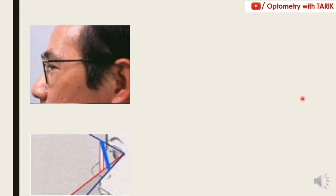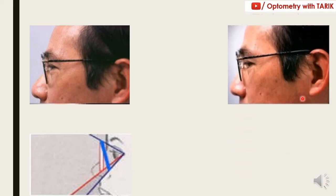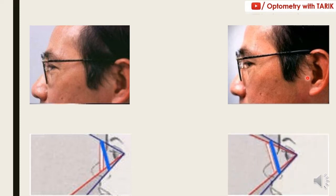Next is vertex distance. Your frame should not sit too far away from the frontal plane of the cornea. The vertex distance should not be too large because the closer your lenses are, the wider the field of view you will get. If you move the lenses away, the field of view reduces; if you bring them closer to the eye, the field of view seen through the lenses increases.